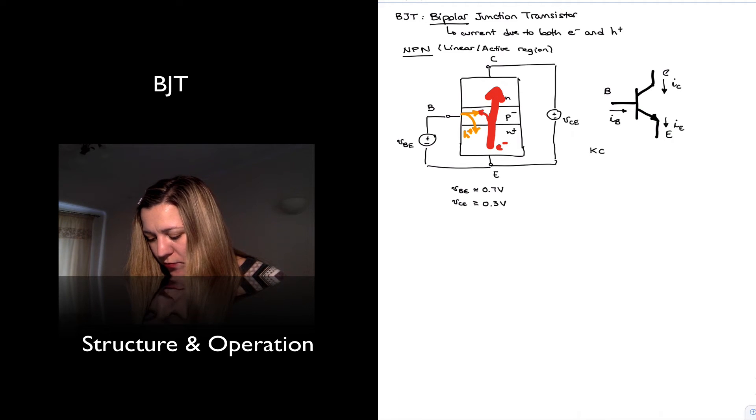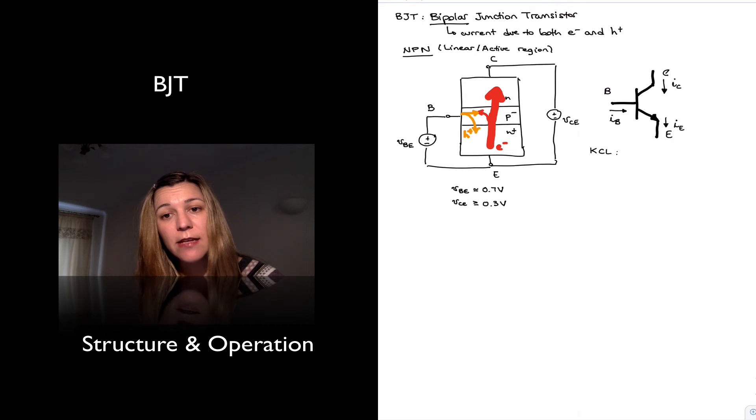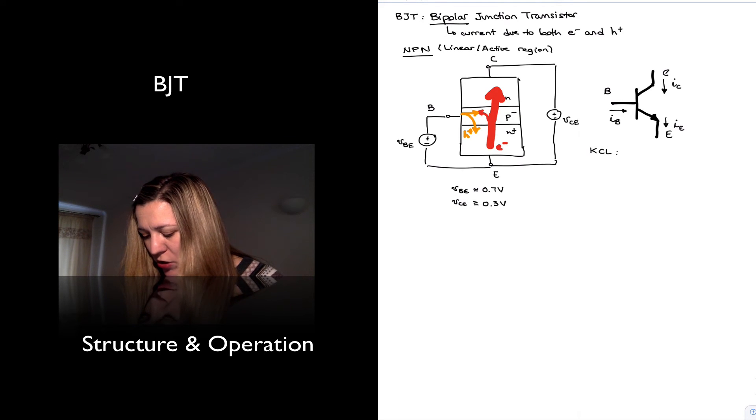From Kirchhoff's current law, we know that the sum of currents entering the device must equal the sum of currents leaving the device. And so we can write the equation that the emitter current is equal to the sum of the collector current plus the base current.